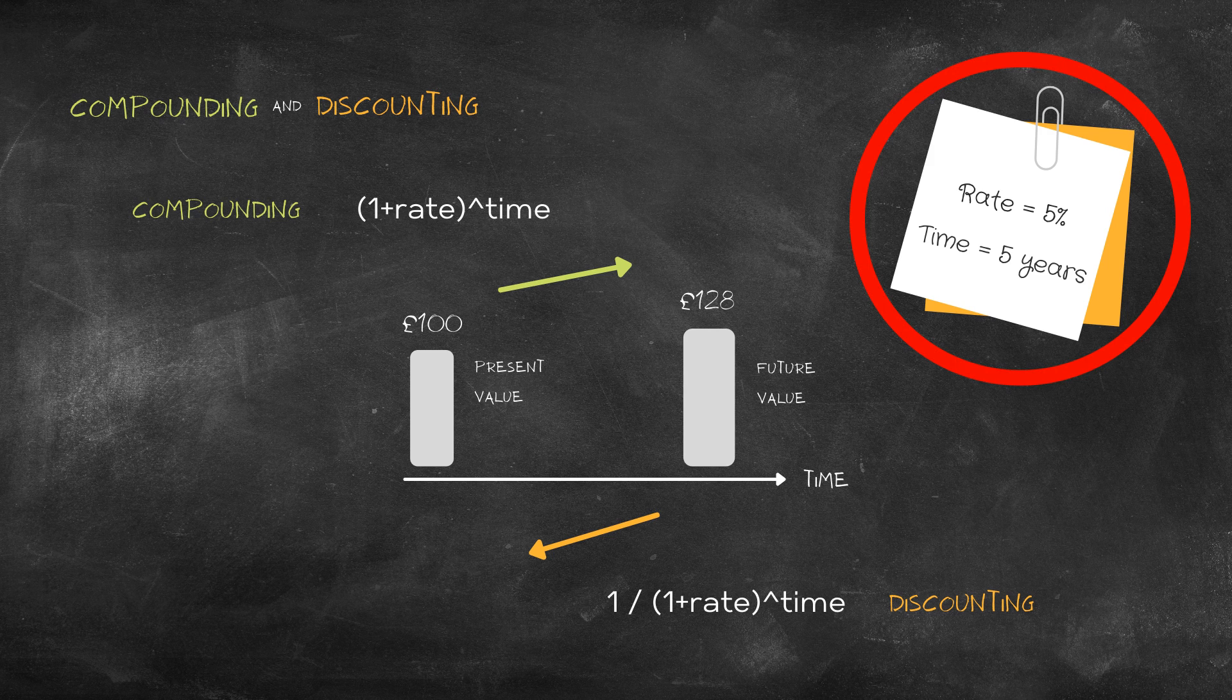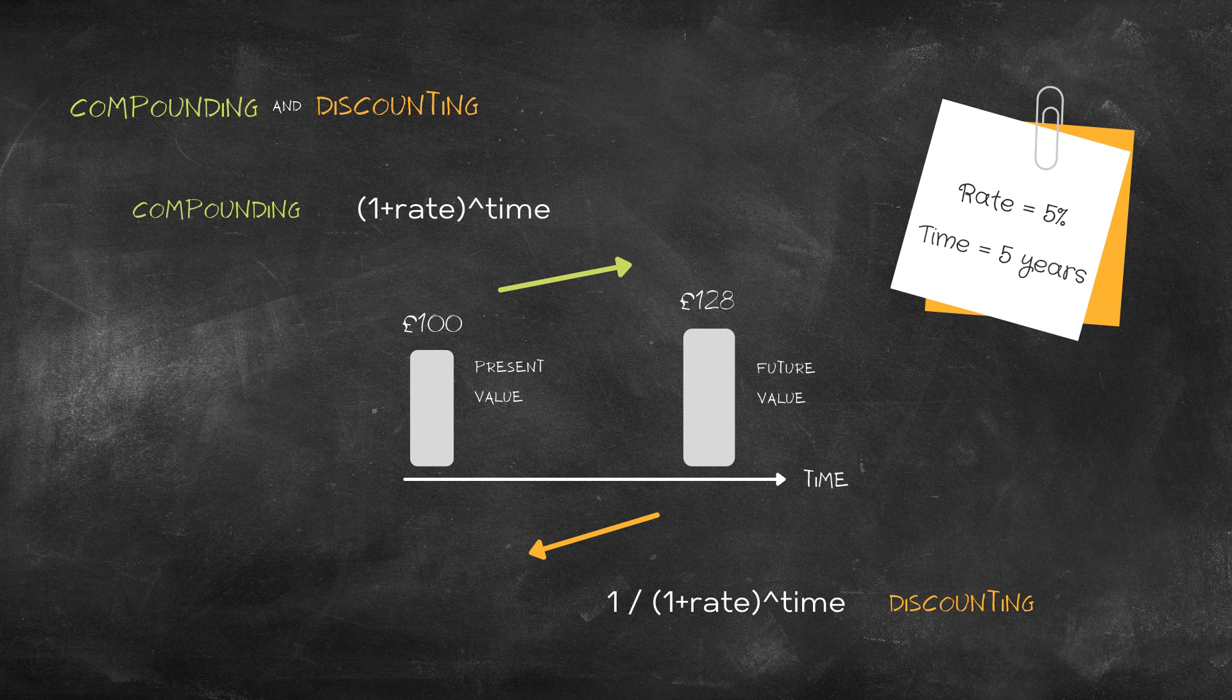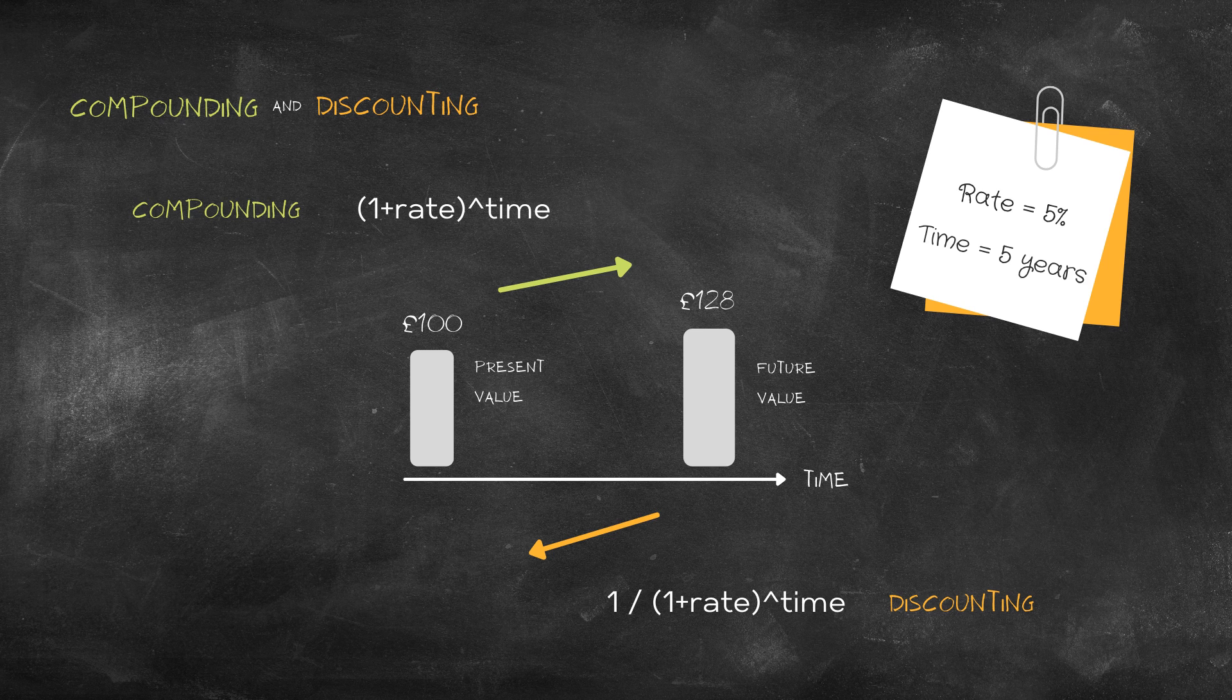In a property investment you will have lots of future cash flows. You can discount all of them to the present value, add them all up, and this will give you a single figure which is the present value of the property investment. And this is what is known as the net present value.